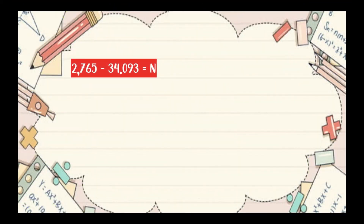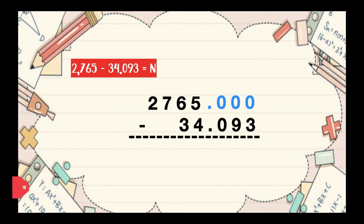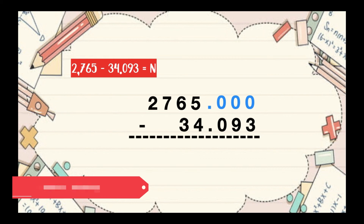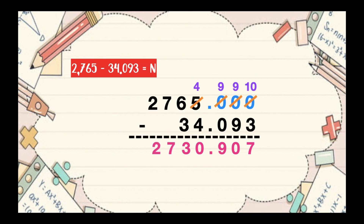Let's have our last example. 2,765 minus 34.093 equals n. Let's find the difference. We need to align the numbers first, then annex the zeros. We're going to borrow 1 from the first non-zero digit, which is digit 5. 5 will become 4, the middle zeros will become 9, and the first zero will become 10. 10 minus 3 is 7. 9 minus 9 is 0. 9 minus 0 is 9. Copy the decimal point. 4 minus 4 is 0. 6 minus 3 is 3. Then bring down 7 and 2. So the difference is 2,730.907.